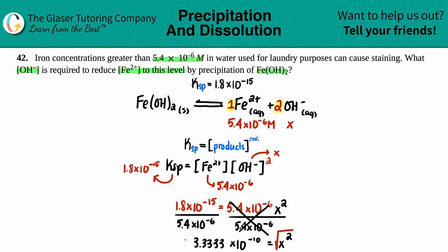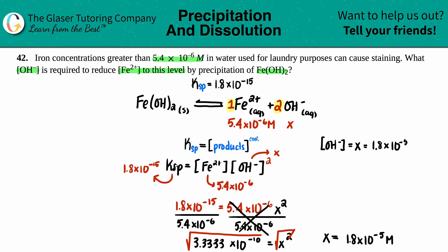Now we take the square root of both sides. That gets rid of the squaring, so x equals the square root of 3.3333×10⁻¹⁰, which gives us 1.8×10⁻⁵. Remember that's in molarity. Going back to what we were searching for — the OH⁻ concentration — since we labeled it as x, the answer is that the hydroxide concentration must be 1.8×10⁻⁵ molarity.